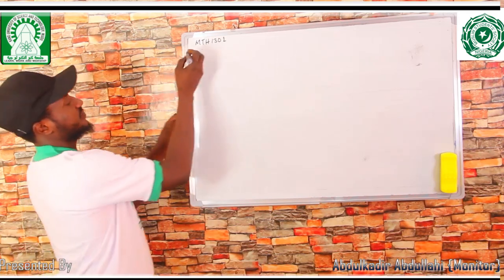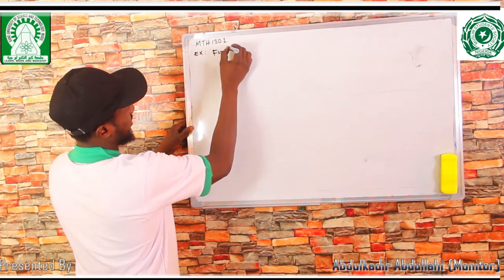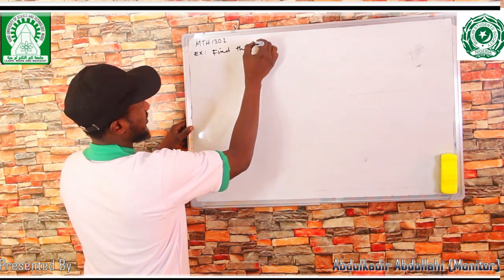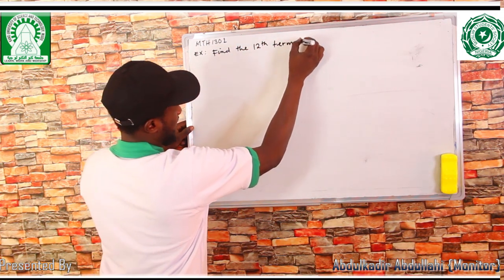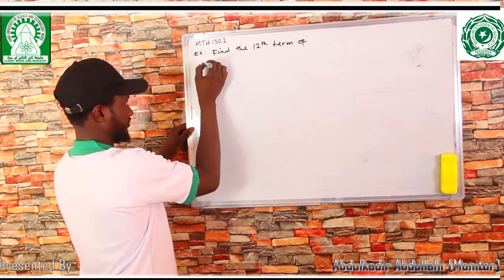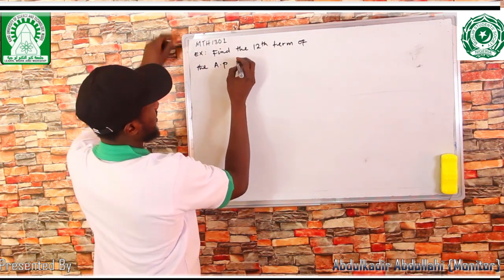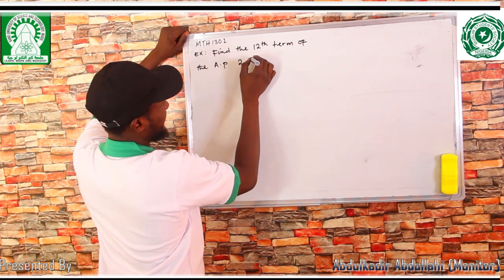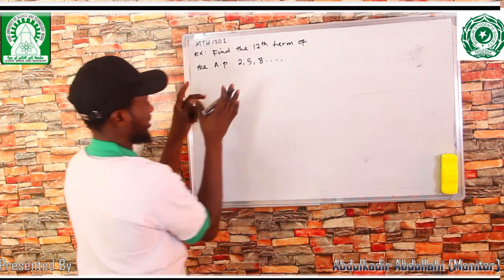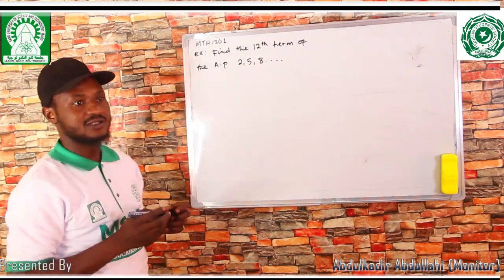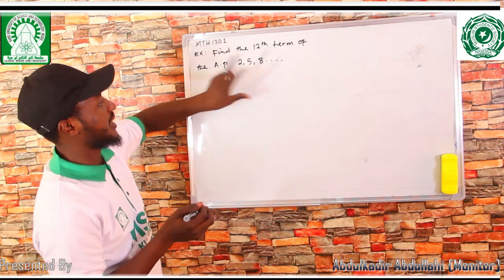Okay, now example one: find the twelfth term of the AP — two, five, eight.